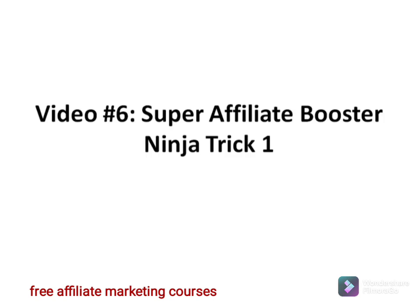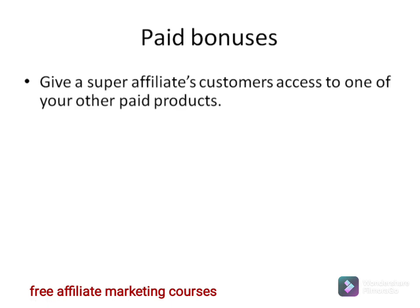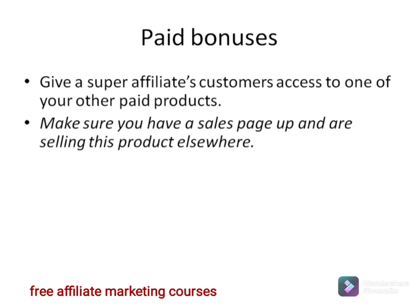Hello and welcome to video number six — the Super Affiliate Booster Ninja Trick number one. This method deals with paid bonuses. Basically, you want to give a super affiliate's customers access to one of your other paid products. In order for this to work, you need to make sure that you have a sales page up and are selling this product elsewhere. This works because if the customer can see that this is an actual paid product, they're getting it for free by buying through somebody else's link.